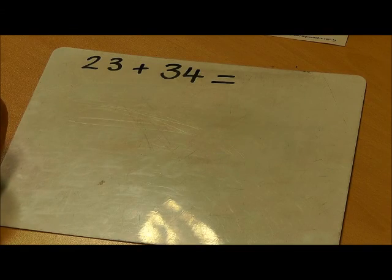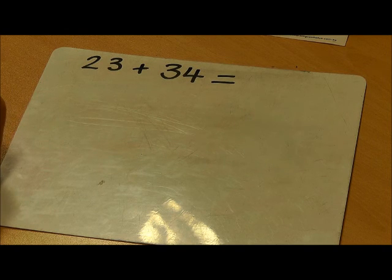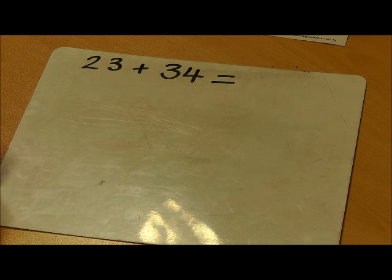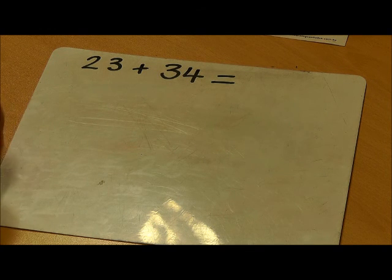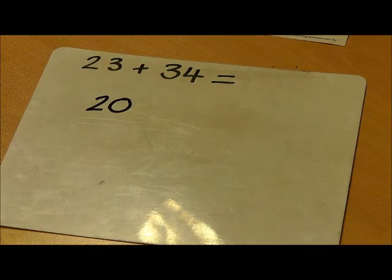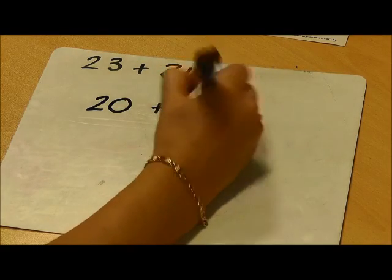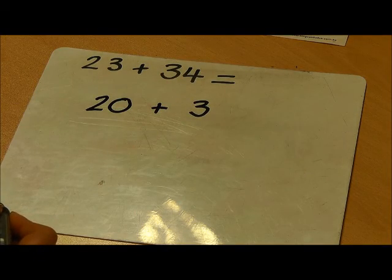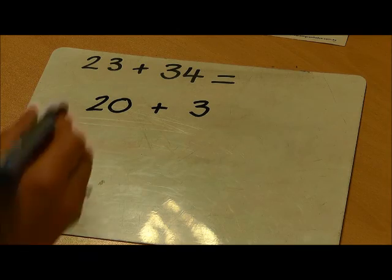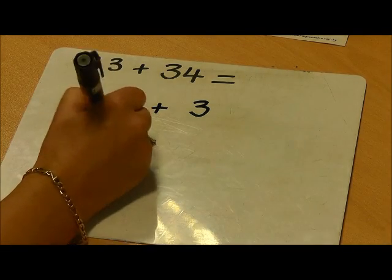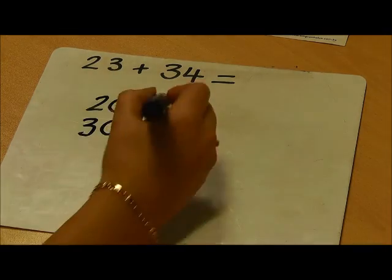I'm now going to add two two-digit numbers together using an alternative method. Here we have 23 add 34. I'm going to partition the numbers. 23 is made up of 20 and 3. 34 is made up of 30 and 4.